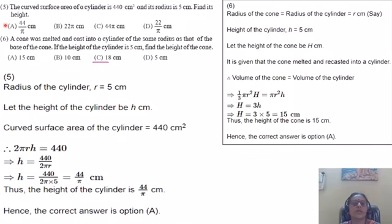Question number 5. The curved surface area of a cylinder is 440 centimetre square and its radius is 5 centimetre. Find its height.